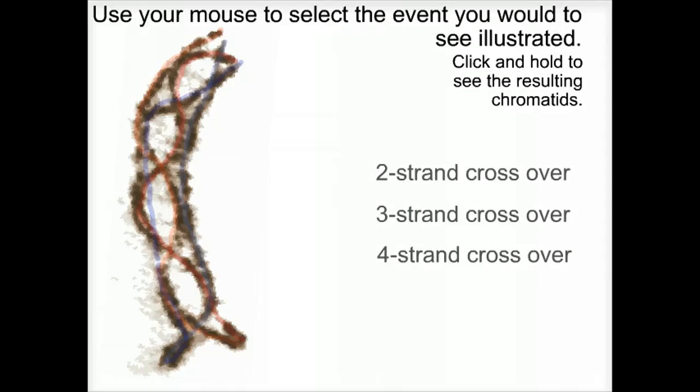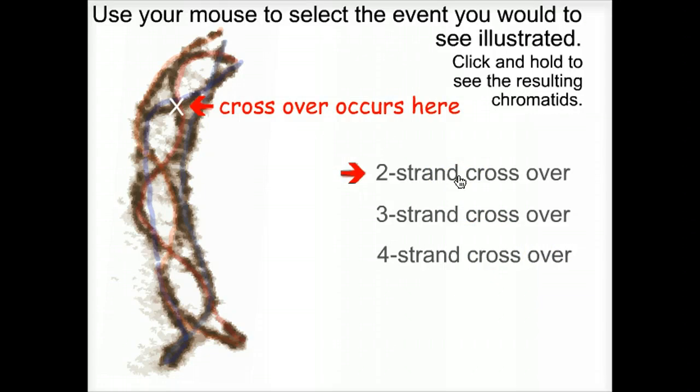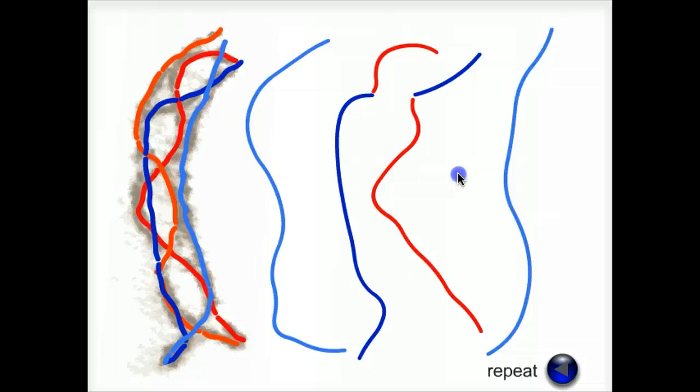Now let's look at the effects of various kinds of crossing over events. This is a crossover that occurs between two strands, one maternal, one paternal. It generates two unaltered chromosomes and two altered chromosomes.